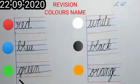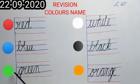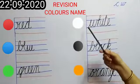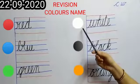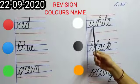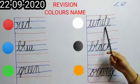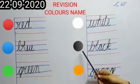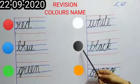Which color is this? This is green color. Write down G-R-double E-N, green. Which color is this? This is white color. Write down W-H-I-T-E, white.